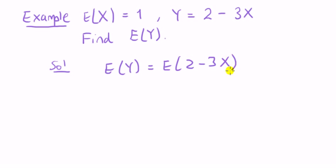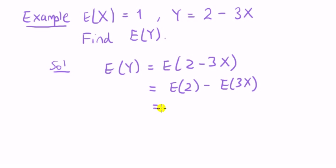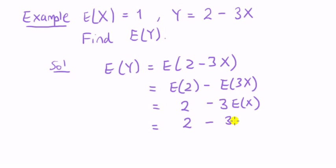Apply the rules. By rule three, it's a linear operator, so we take the expectation through the brackets. The expected value of a constant is a constant, so two, minus — now we have the expected value of a constant times a random variable, so the constant three can come out: two minus three times E[x]. We're told E[x] equals one, so substituting: two minus three times one equals minus one. Finished. You could probably omit the intermediate line and go straight to the answer.